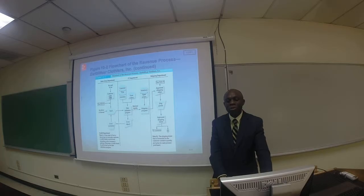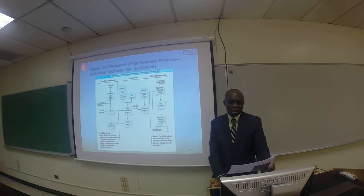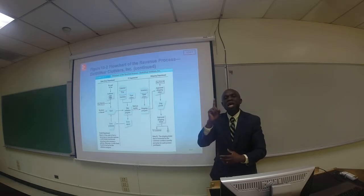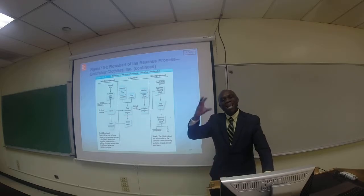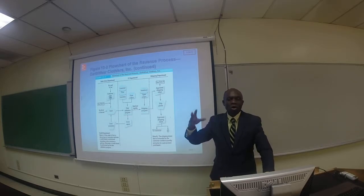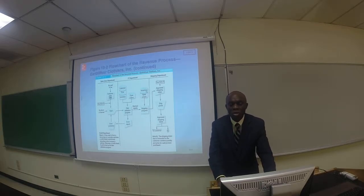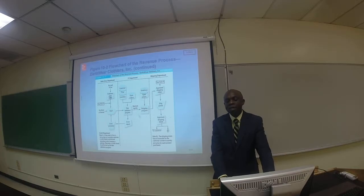If there is an error, an error report is produced and it is fixed. After the orders have been processed in batch — meaning 20 or 30 are processed at the same time instead of individually — at night or at the end of the day, the IT department processes the orders in batch. The inventory that the customer is ordering is also taken into consideration, and ultimately the information is sent to the shipping department.